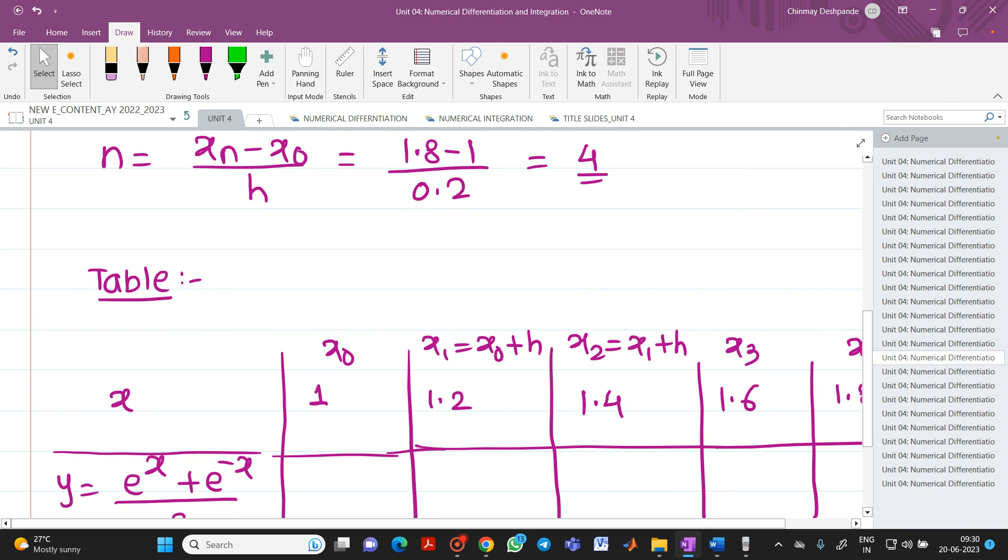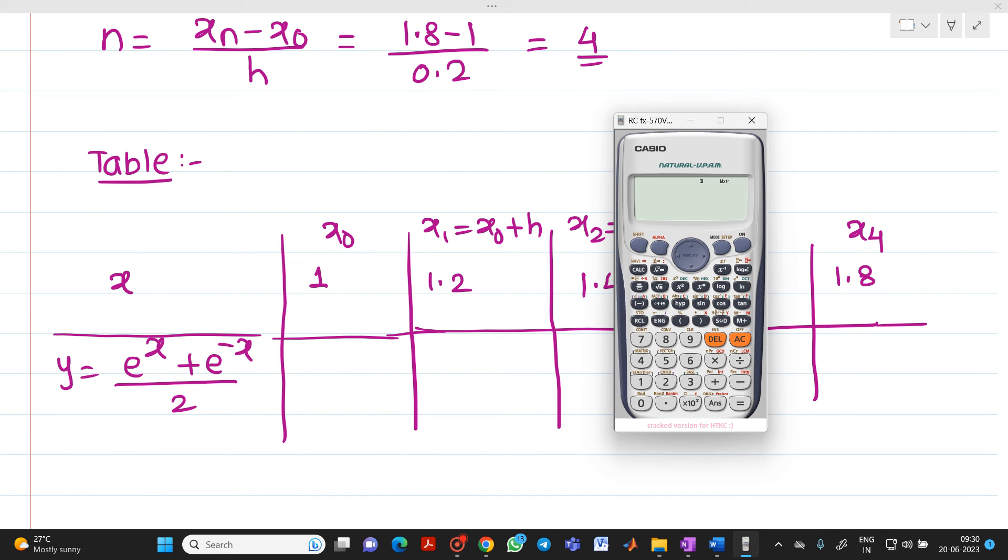Now, how to do this? We see it carefully. Keep your calculator in radian mode. Then, I will do it like this. In a bracket, I am taking it as shift ln, you will get e raised to. Now, alpha, I will press it as here a. Then, plus shift ln, you will get e, and it will be minus of alpha, this symbol, you will get a. So, divided by 2.